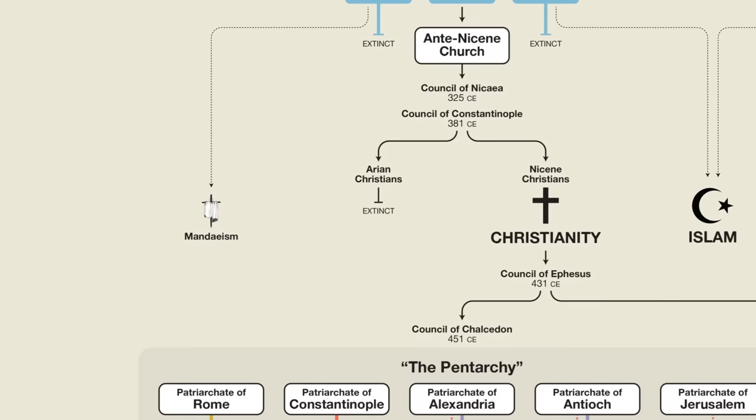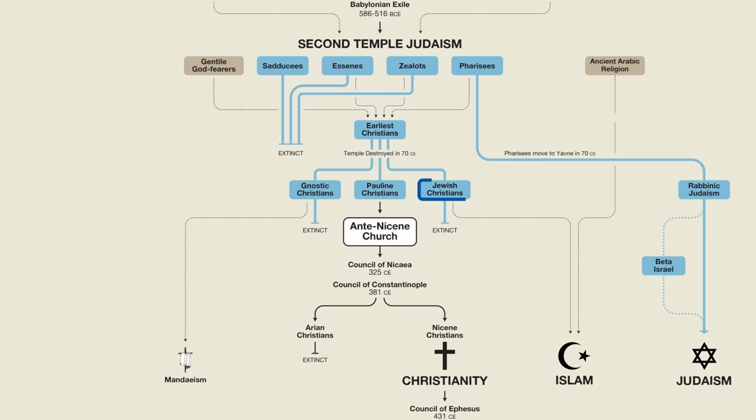This is especially important with regard to Jewish Christians. I got a lot of comments from people pointing out that Messianic Jews still exist — and this is correct. However, Messianic Jews do not trace a line all the way back to the original Jewish Christians from ancient times. Rather, Messianic Jews are more recent converts. So, to make things more clear, I decided to change the label 'Jewish Christians' to 'Ebionite Christians,' the Ebionites being one of the early Jewish Christian sects, similar to or the same as the Nazarenes.